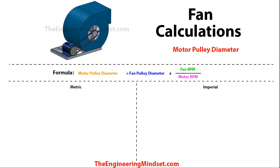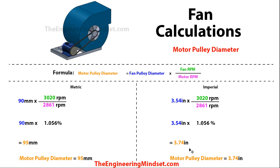So the next thing we can calculate is the motor pulley diameter. There could be various reasons why this has changed — say there's a new motor being replaced or a new fan has come in — and you want to know what diameter that pulley needs to be to achieve the correct airflow rate. The formula is: the motor pulley diameter is equal to the fan pulley diameter multiplied by the fan revolutions per minute divided by the motor revolutions per minute. If we drop the numbers in — the fan has a 90 millimeter diameter pulley, or 3.54 inches — doing the division between the two RPMs leaves us with a ratio of 1.056. Multiplying that by the fan pulley diameter gives us 95 millimeters, or 3.74 inches, for the motor pulley diameter.